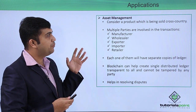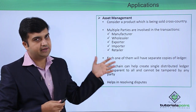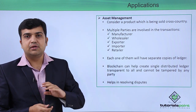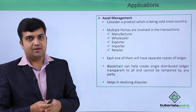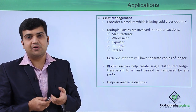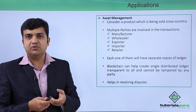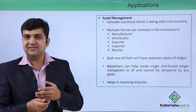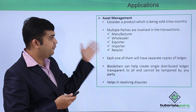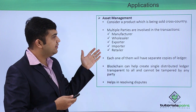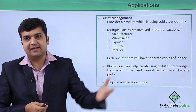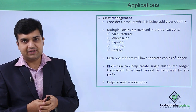Let's consider a product which is being sold cross country — it can be a car or a medicine sold cross country. Before the product lands into the hands of the customer, it goes through various different entities: it can start from the manufacturer to the wholesaler, exporter, importer, retailer, and then finally it lands in the hands of the customer.